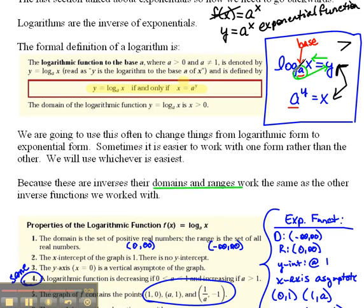So, take the base, raise it to the other side, equals the argument. If you can switch these back and forth, and if you understand the properties, then we're going to be okay on this bit of material. To be continued...